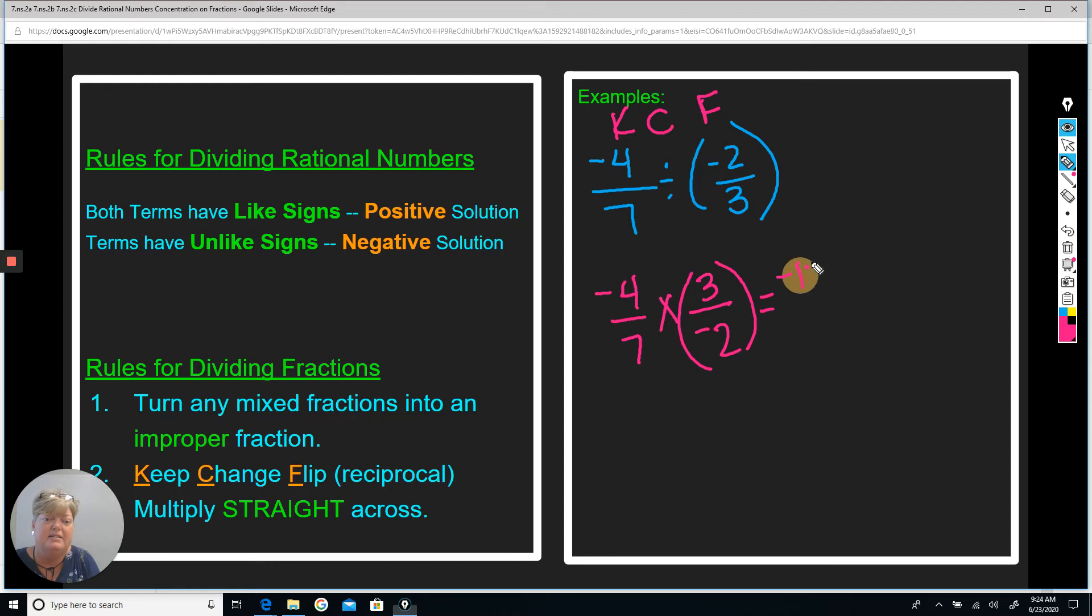And I'm going to go ahead and multiply straight across. Negative 4 times 3 is negative 12. 7 times negative 2 is negative 14. And when you're looking at this, do you notice that both terms are negative? They are like signs. And if they're like signs, that means my solution is going to be positive.